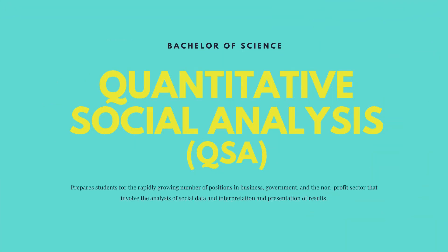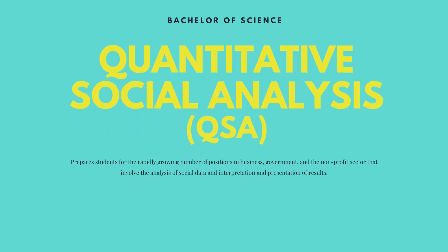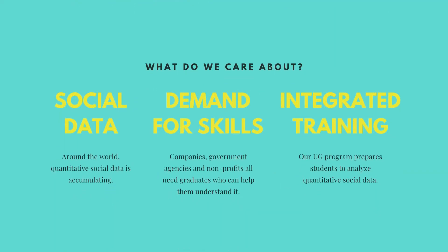This program provides a combined training in social science, including sociology, political science, economics, and psychology, with a rigorous training in the use of quantitative methods to analyze social data. At present, few, if any, undergraduate programs prepare their students to analyze social data by providing an integrated training in social science theory and evidence, statistical methods, the analysis of social data, and the interpretation and presentation of results.